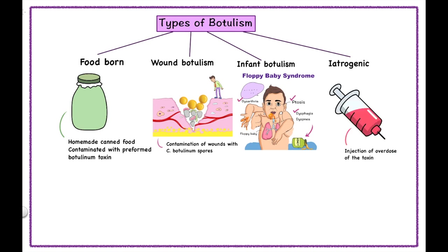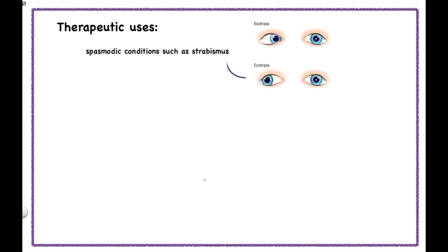Now some therapeutic uses. As botulinum toxin produces flaccid paralysis, it can be used therapeutically for the treatment of spasmodic conditions like strabismus, blepharospasm, and myoclonus.